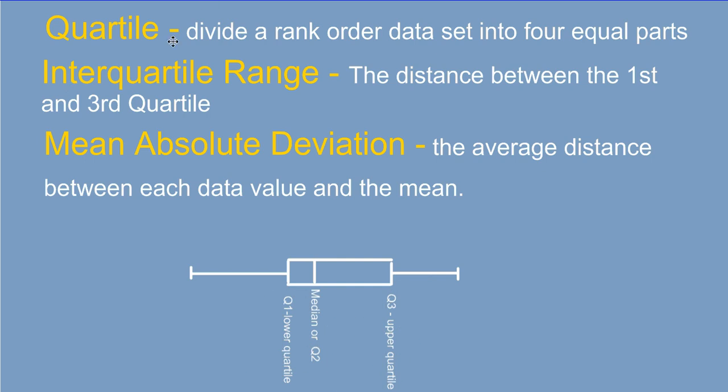Next, the interquartile range. The interquartile range is the distance between the first and the third quartile. So we're looking at the distance from the third quartile to the first quartile, and to find that, you take the third quartile minus the first quartile.